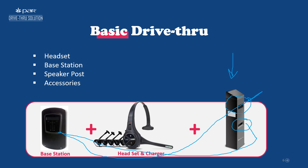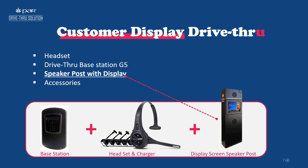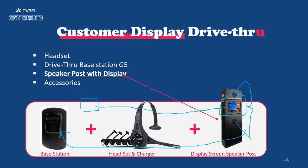In the customer display option, we have mic, speaker, and a customer display — all three connected to the base station. The base station and customer display are directly linked to the order taker's point of sale, so whatever the order taker is punching in, the customer can see it in real time on the drive-through speaker post display. Additionally, we can set up marketing content and an order taker camera so the customer can see the order taker's face on the display screen.